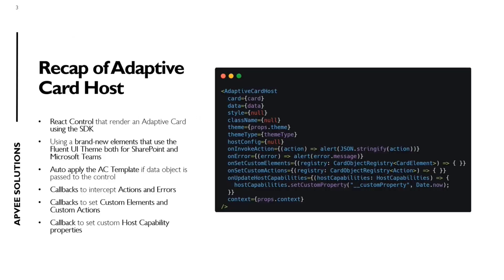Just a simple recap about the Adaptive Card Host. This React control is able to render an Adaptive Card with the look and feel of Fluent UI, using the Fluent UI React controls for actions and inputs inside a SharePoint Framework solution. It takes the Adaptive Card payload, the object data, and merges them using the Adaptive Card template extension. There are different properties you can use, for example the onInvokeAction property to manage actions you can execute inside the Adaptive Card.